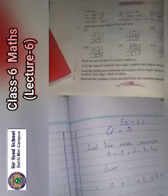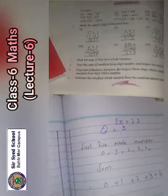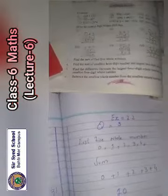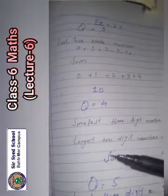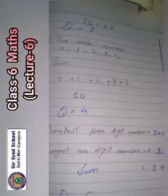Next question number four is find the sum of smallest three-digit number and largest two-digit number. Now, smallest three-digit number which we have is 100.